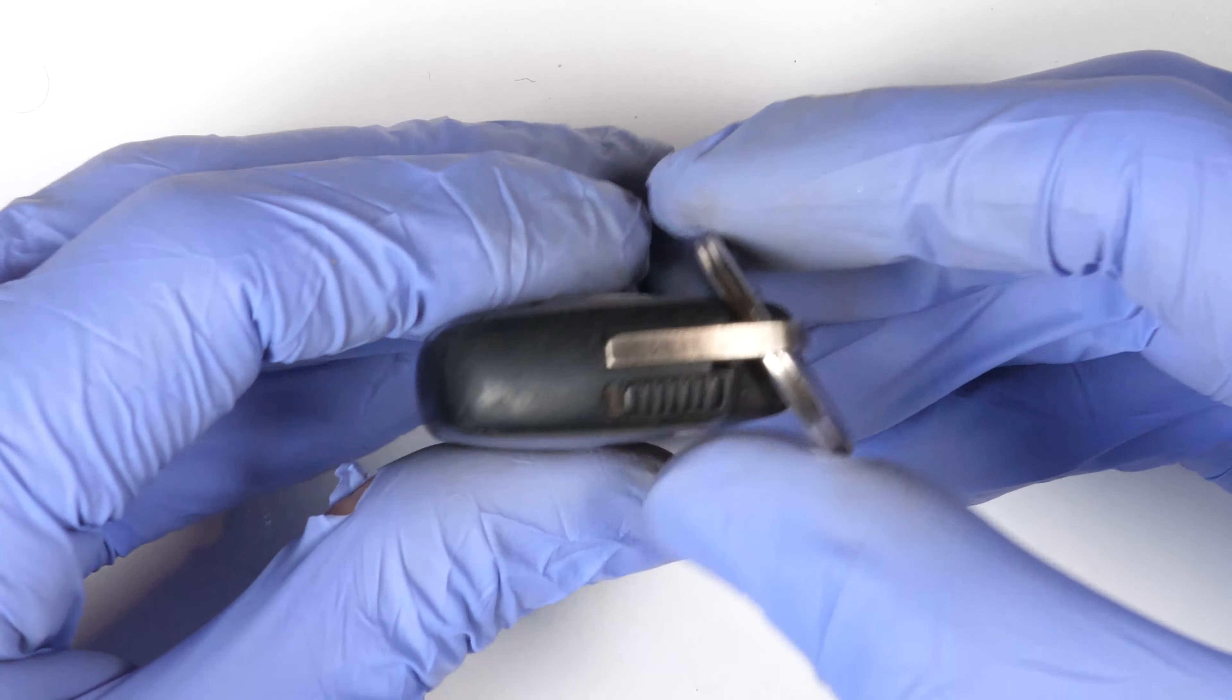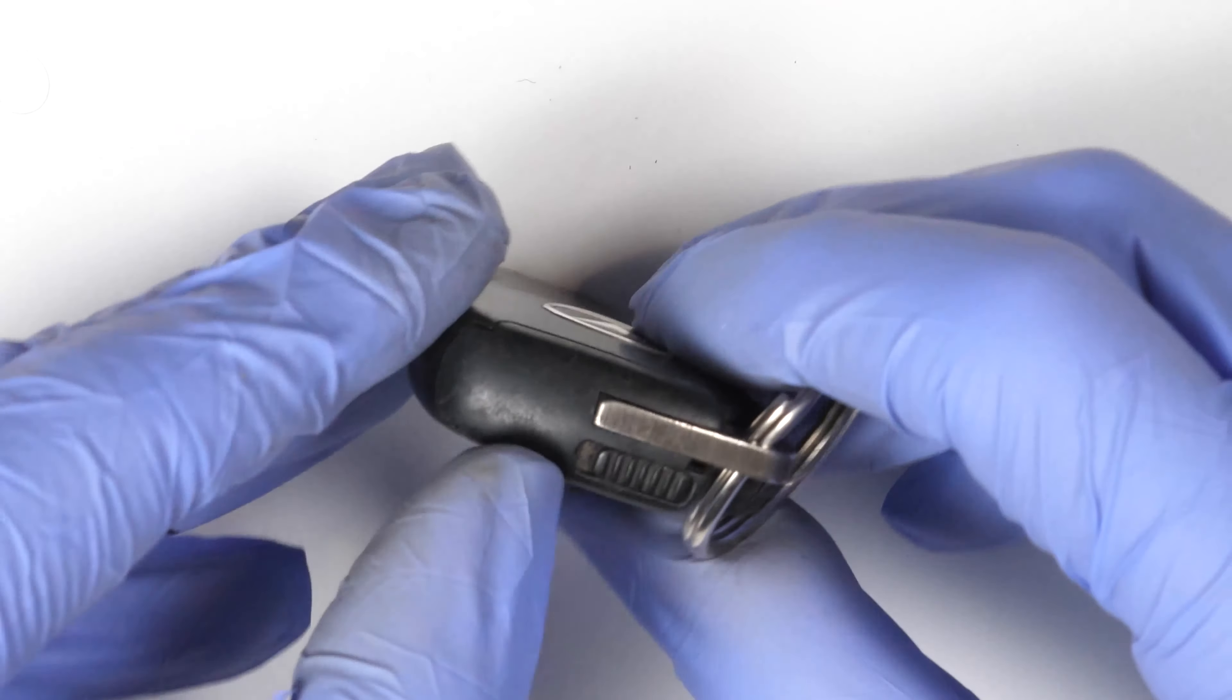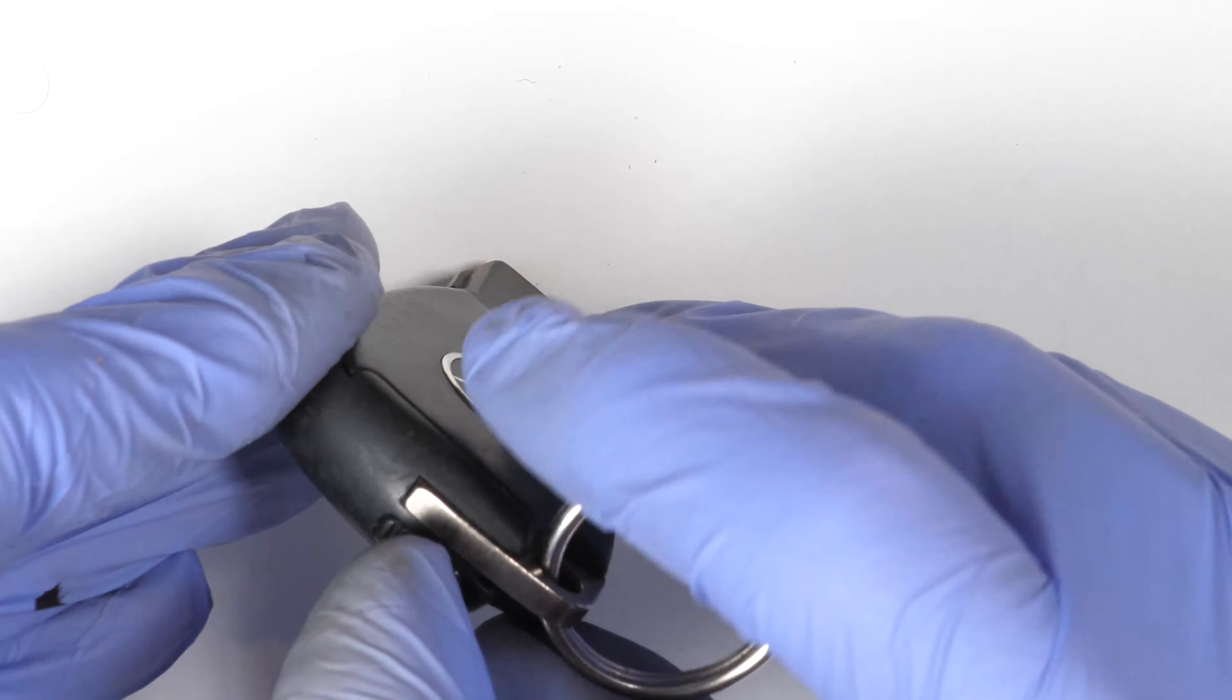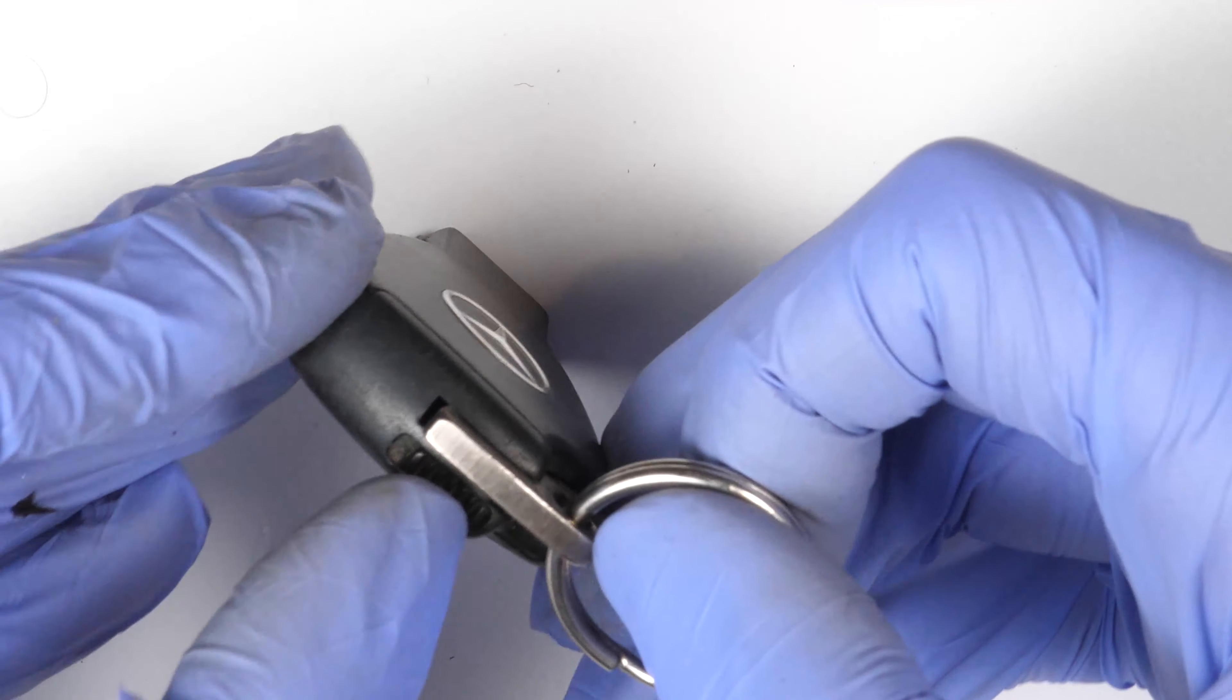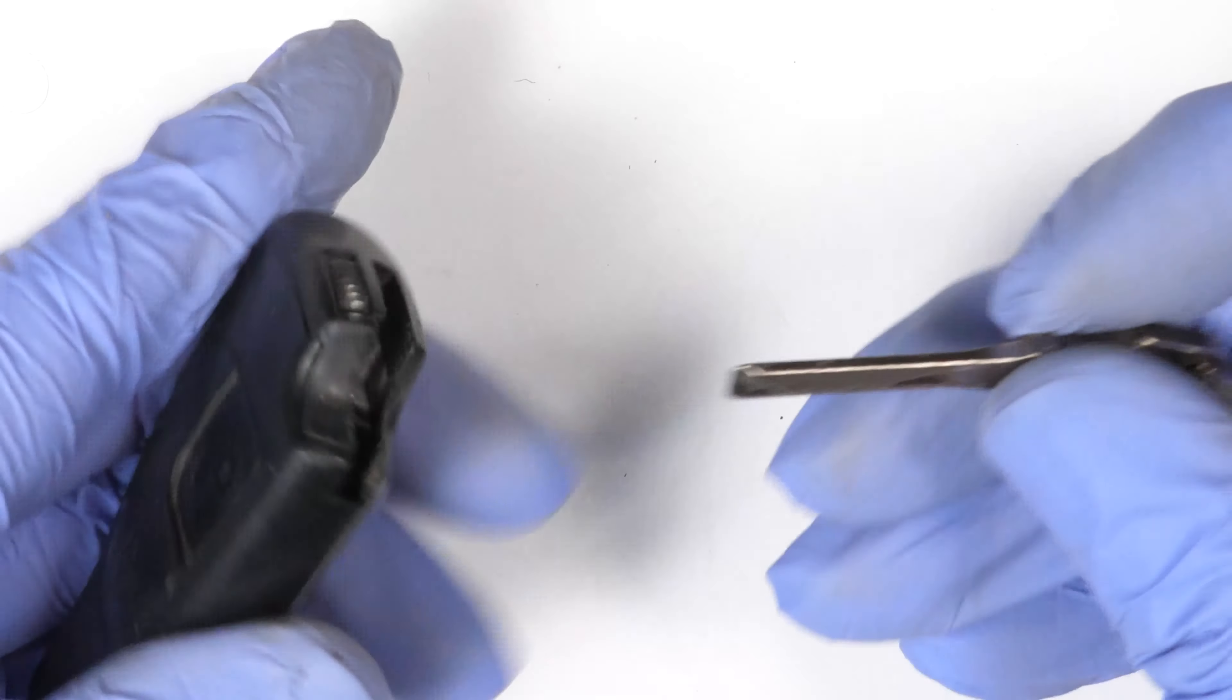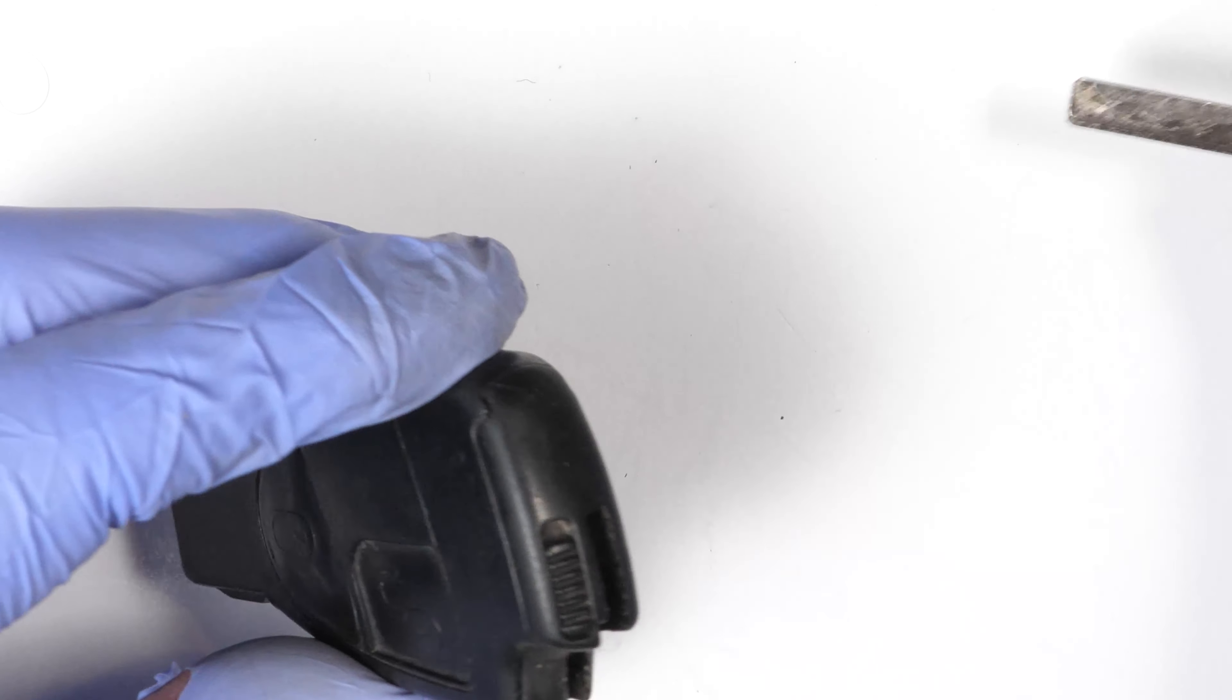Here on the top you see there is a smaller slider you need to slide in this direction, and at the same time pull the physical key. So let's do it. Here we go. So this is the physical key that was inside of the key fob. We won't need it really for the moment.